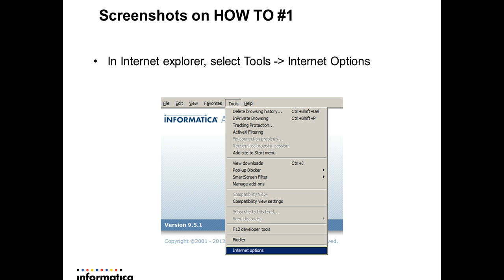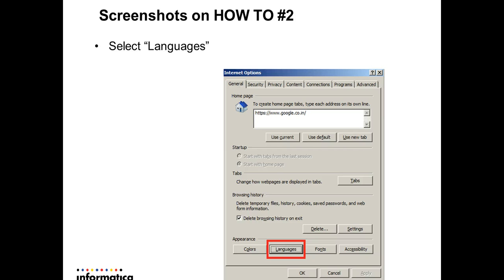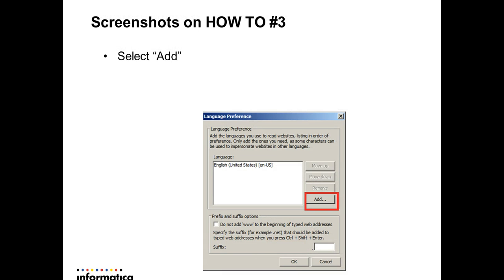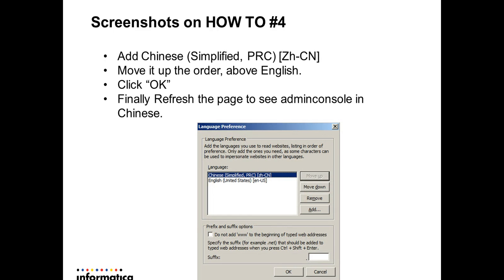First, we open Internet Explorer and go to the Tools menu. In the Tools menu we select Internet Options, and we get a pop-up similar to this. We are interested in the Languages section, so we select Languages and add the concerned language. We add Chinese and move it up in the order so that it comes before English and gets higher precedence. We select OK and then refresh or reopen the admin console page to see it displayed in Chinese.